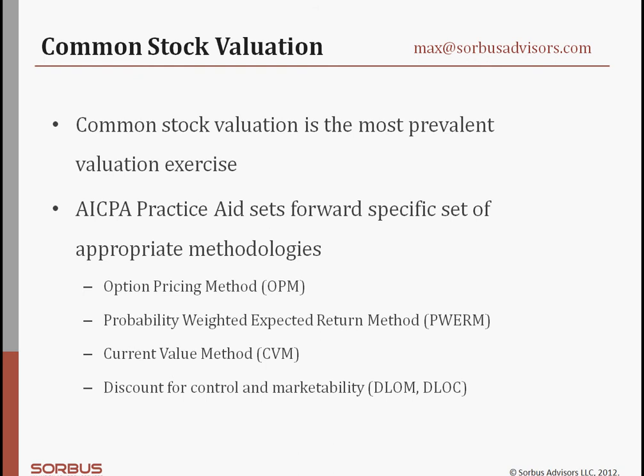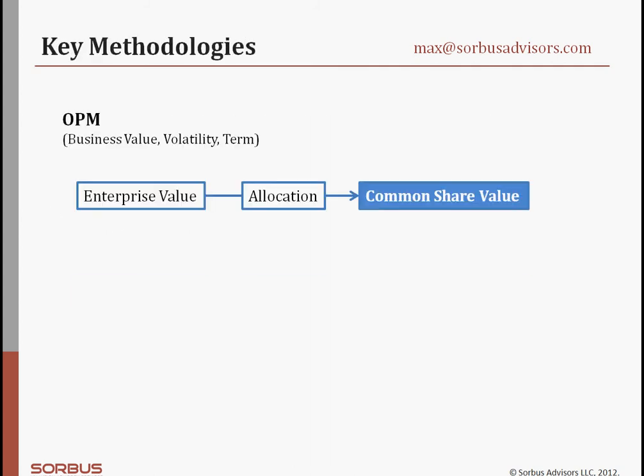The AICPA's first guidance for valuing privately held securities was initially published in 2005, and an updated exposure draft was released in 2011. It outlines several valuation approaches and important elements of each analysis. Most valuations of common shares can be done using a combination of option pricing methodology, probability-weighted expected return method, or current value method. Other elements commonly considered include discounts for control and discounts for marketability. Let's go through each one of those methods one by one.